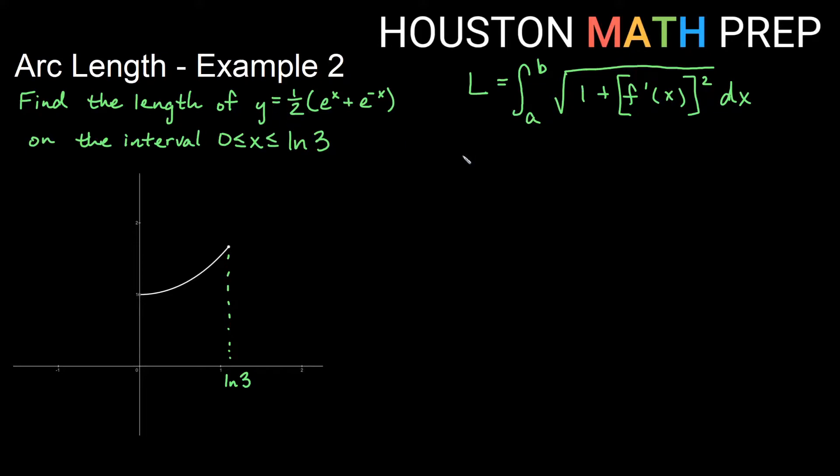So what we'll first need to do is square our derivative. So our f of x is one-half e to the x plus e to the minus x. Our f prime then that we're going to use is going to be one-half times, now the derivative of e to the x is itself.